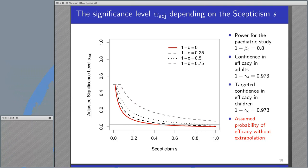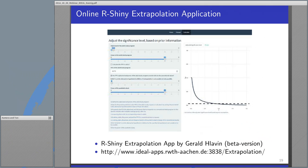If you want to explore the impact of these parameters more thoroughly, there is good news. Thanks to Gerald Lavin, he developed an online R Shiny extrapolation application which you can access from the link below. But keep in mind this is a beta version, so we don't guarantee it will deliver correct results.